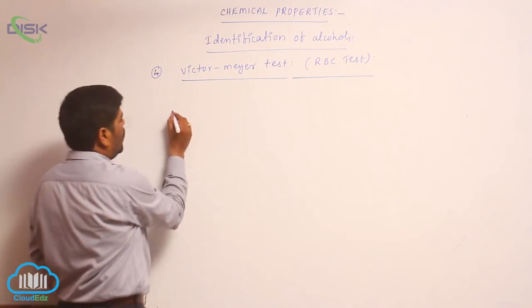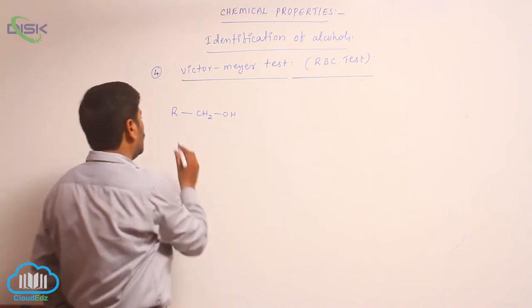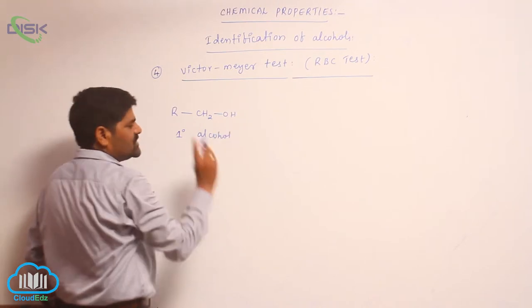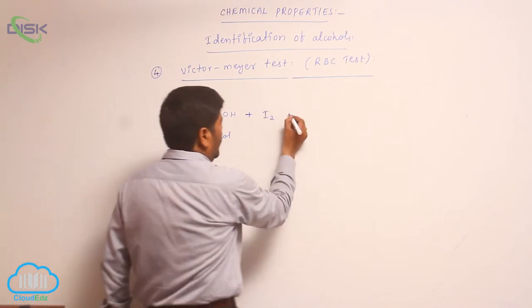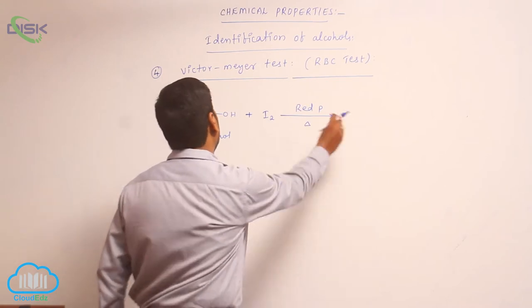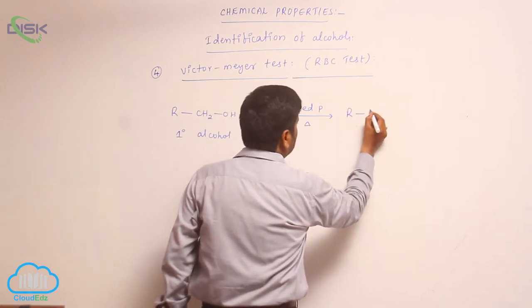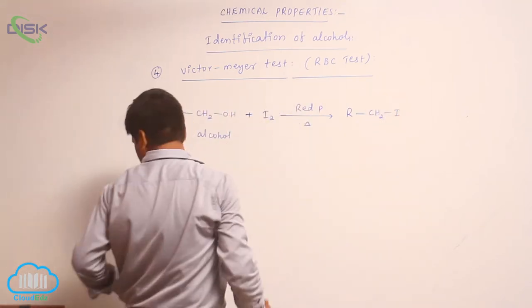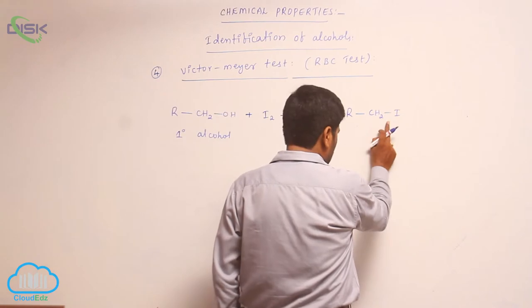For a first-degree alcohol (RCH₂OH), it first reacts with iodine in the presence of red phosphorus. With loss of HI and red phosphorus, it converts into an alkyl iodide (RCH₂I). This alkyl iodide then reacts with silver nitrite (AgNO₂) and converts into a nitro compound (RCH₂NO₂).